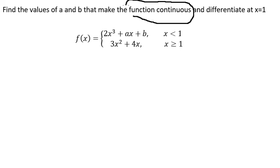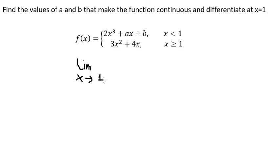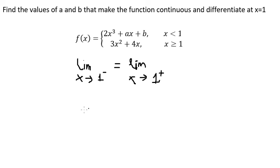To make the function continuous, the limit as x approaches one from the left should equal the limit as x approaches one from the right. On the left side, if we put x equals one into 2x³, we get 2 times one to the power of three, which is just 2.